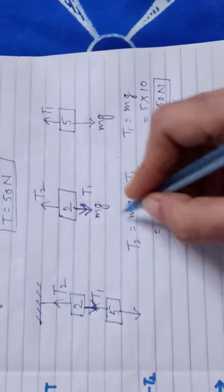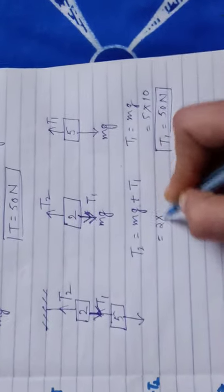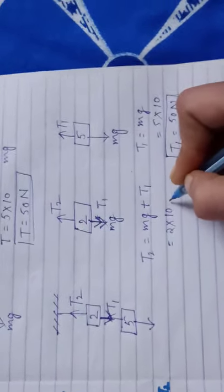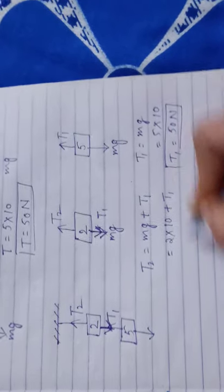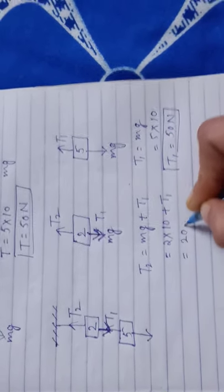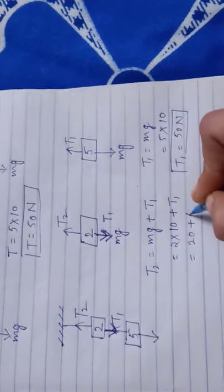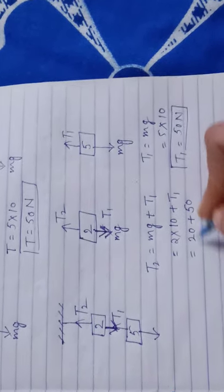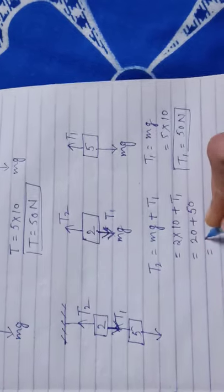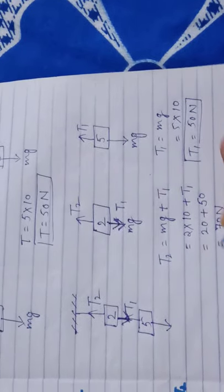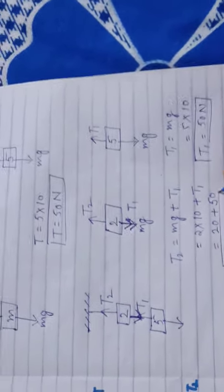T2 is equal to mg and both are in same direction, so plus T1. What is the value of mg? m is equal to 2 and g is equal to 10, plus T1. 20 plus the value of T1 is 50 newton. 20 plus 50 equal to 70 newton.